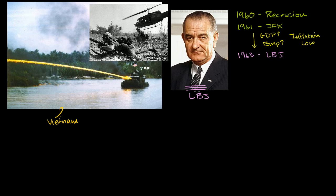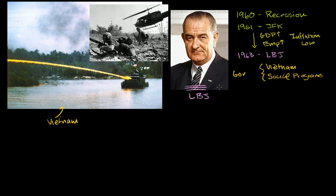JFK was already dabbling in Vietnam, but it became really a major war under Lyndon Baines Johnson. So some combination of Vietnam and a huge number of social programs — increased government spending to try to ease inequality in the U.S. — one could call it guns and butter. The net effect was that even though the economy was already red hot and at its potential, he increased government spending even more, taking it beyond potential and making it overheat. And so in 1966 and onwards, inflation started to grow at a fairly uncomfortable rate.